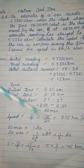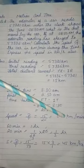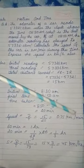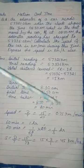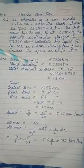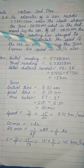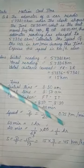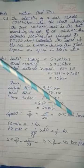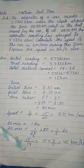Speed equals distance upon time. Distance is 15 kilometers and time is 20 minutes, so speed equals 15 upon 20, giving the answer 0.75 kilometers per minute. The second part requires expressing the speed in kilometers per hour.